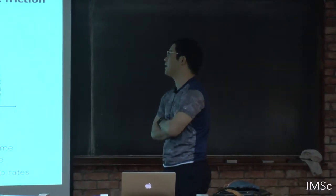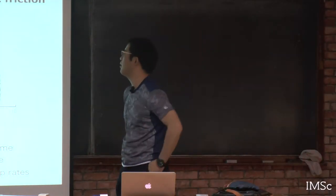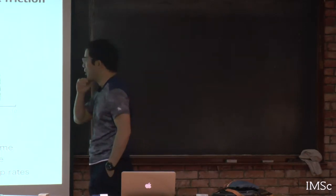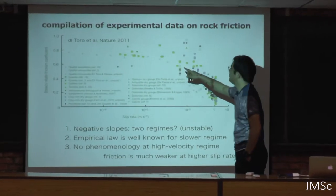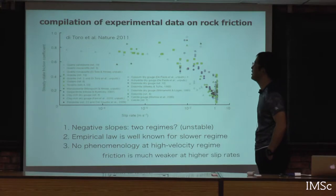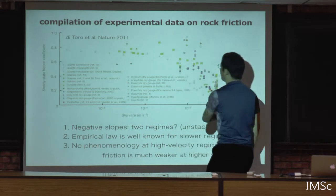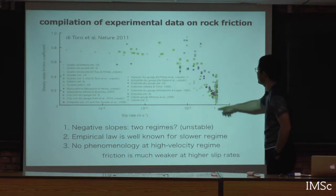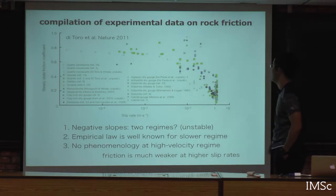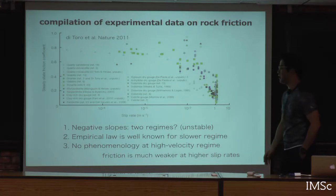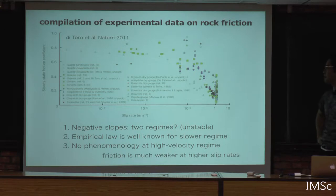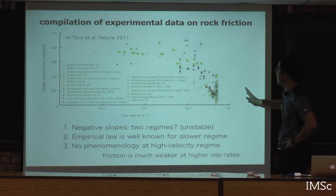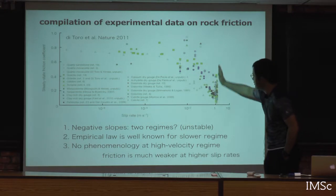There have been many experiments on the frictional properties of rocks. This figure shows the steady-state friction coefficient as a function of slip velocities, where the unit is meters per second. At the fastest slip, it is almost one meter per second, which is as fast as the maximum speed of an earthquake fault during earthquakes. So this is the maximum velocity range we need to investigate.